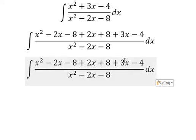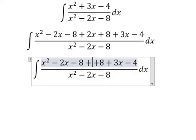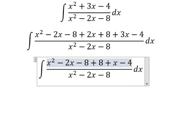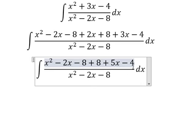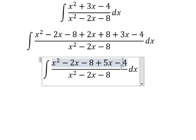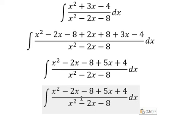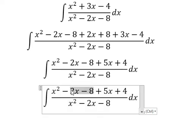2x and 3x gives us 5x. 8 minus 4 gives us positive 4. This one divided by this one, you get 1.